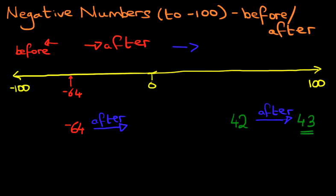We have to go one step this way. So what number comes before that? It is? Don't forget we're starting from minus 1, minus 2 all the way up to minus 100. The number before, sorry, the number after it is minus 63.